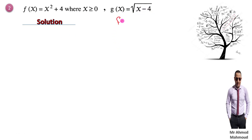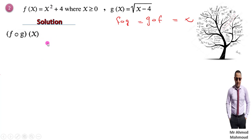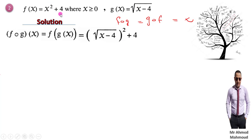We want to find f∘g and g∘f, and both must equal x. For f∘g: substitute g inside f — f(√(x−4)) = (√(x−4))² + 4 = (x−4) + 4 = x. The square root and power of two cancel, and the −4 and +4 cancel, giving x.